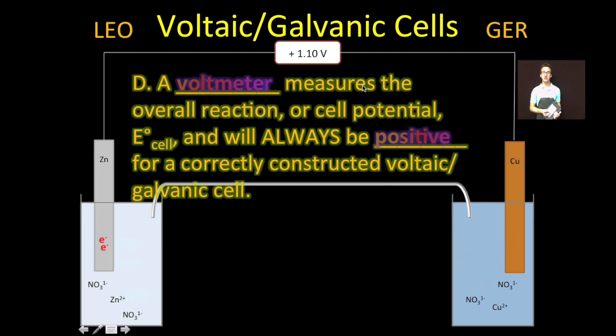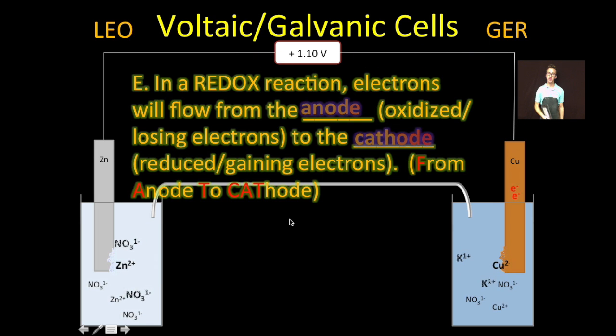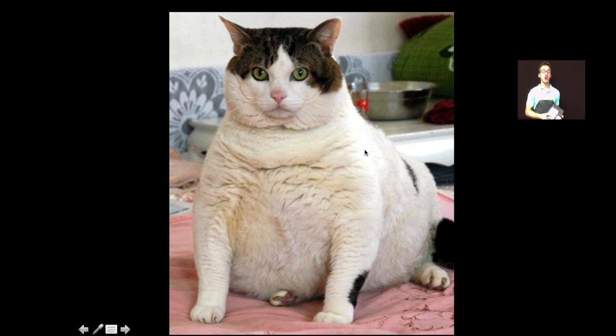Now, we'll often place a voltmeter to measure the overall reaction or cell potential. For a correctly constructed voltaic cell, your voltage is always going to be positive. Because remember, a positive cell potential indicates a spontaneous reaction, and voltaic cells are spontaneous or thermodynamically favored redox reactions. Last note here, in a redox reaction, your electrons are going to flow from the anode, the thing being oxidized or losing electrons, to the cathode, the thing that's being reduced or gaining electrons. So another great mnemonic, fat cat, to help you remember: electrons will flow from the anode to the cathode.